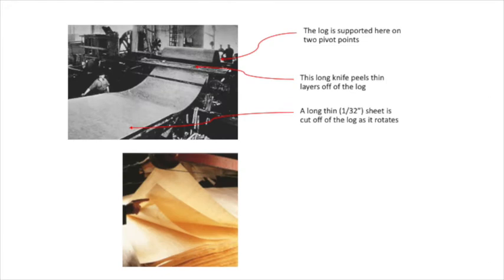Here we can see an image on the top of an early 20th century plywood factory. A log is held between two points and rotated against a long and very sharp knife. That knife peels off a very thin sheet of wood from the log — about a 32nd of an inch thick, or about the same thickness as the cardboard in your average cereal box. This very long, thin sheet is then cut into smaller sheets of veneer, as you can see on the bottom image.